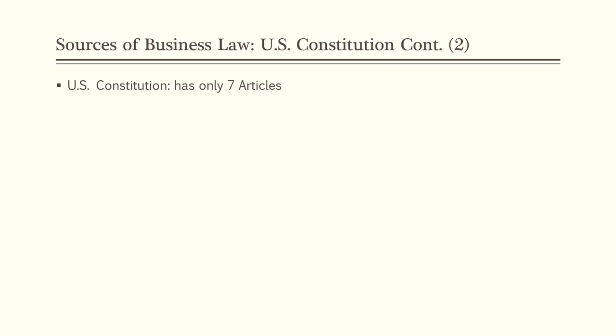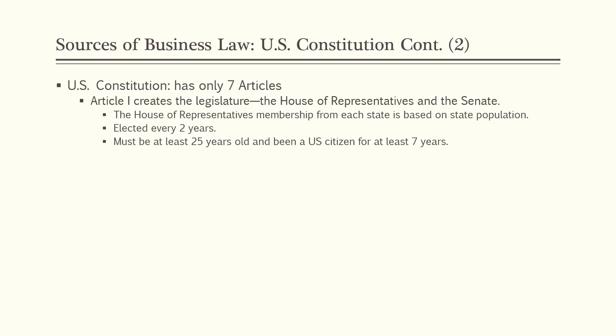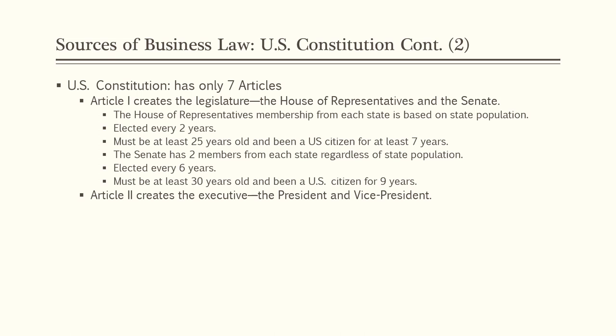The U.S. Constitution has only four pages and seven actual articles. Article I creates the legislature — the House of Representatives and the U.S. Senate. The House has membership from each state based on population, so the census is very important. House members are elected every two years and must be at least 25 years old and a U.S. citizen for at least seven years. The Senate has two members from every state regardless of population, is elected every six years, and requires members to be at least 30 years old and a U.S. citizen for nine years.